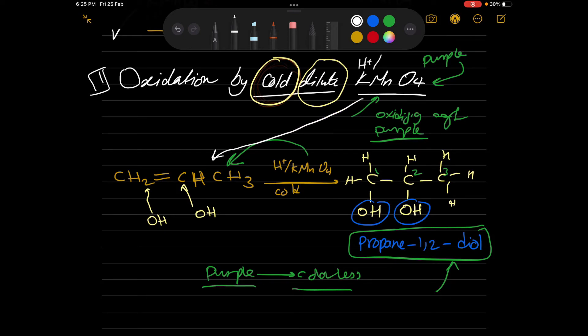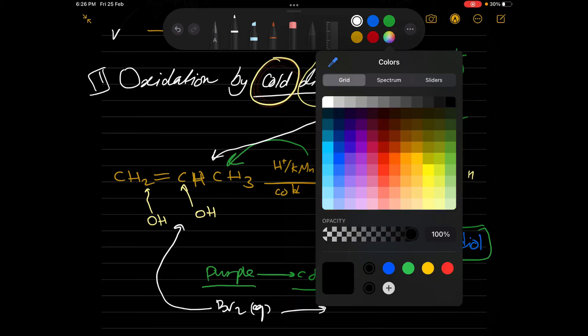Another test is Br2 aqueous. Once you add the Br2 aqueous on the alkene, you notice that the bromine has a color when it's in aqueous form. And once you add it to alkene, it makes reaction and then it becomes colorless.